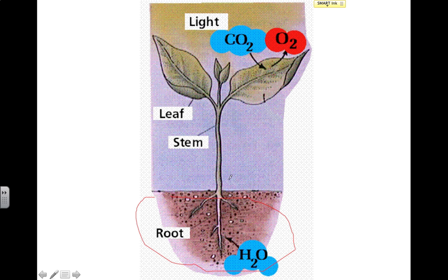The next area I will point out is the stem. The main functions of the stem are to hold the plant up towards light, hold the leaves up towards light, and also it's going to be really important in transporting water and sugars and other nutrients back and forth between the roots and the leaves.